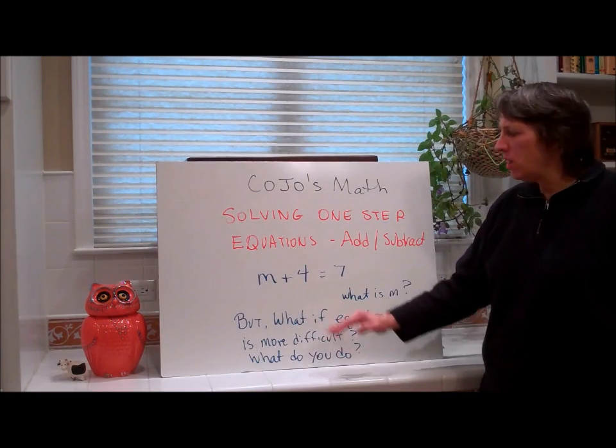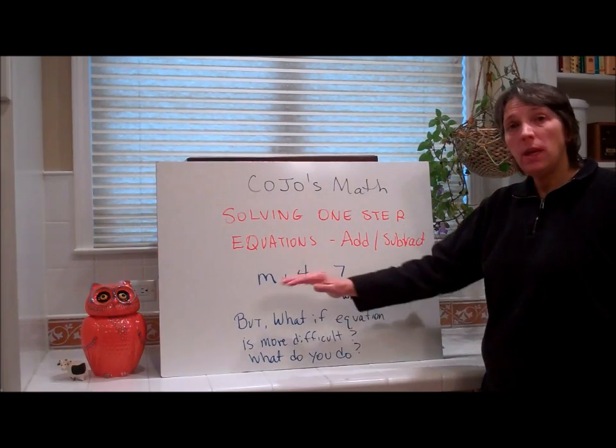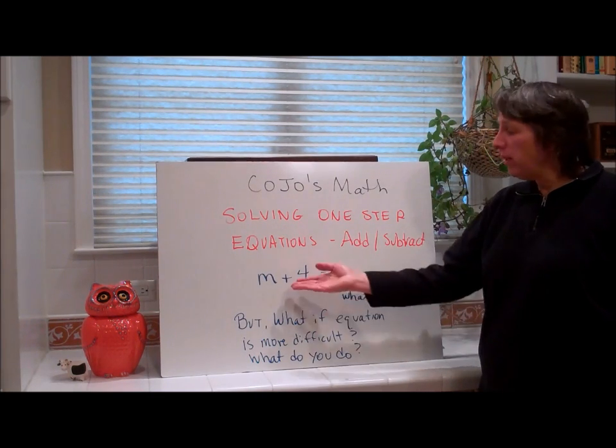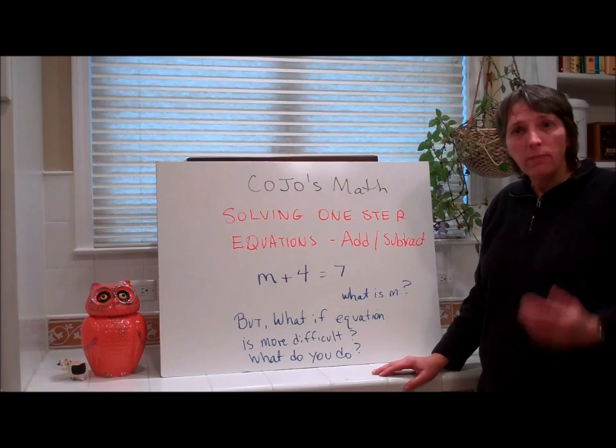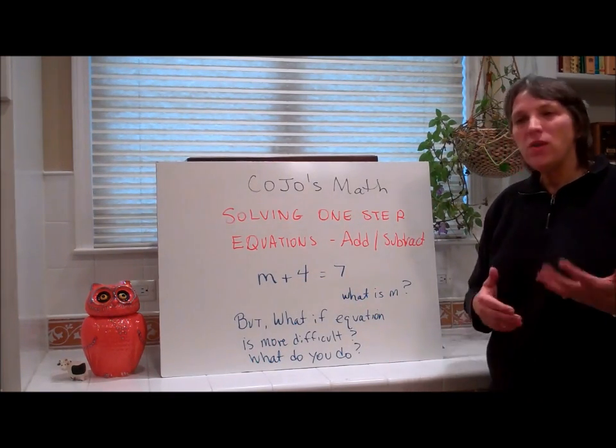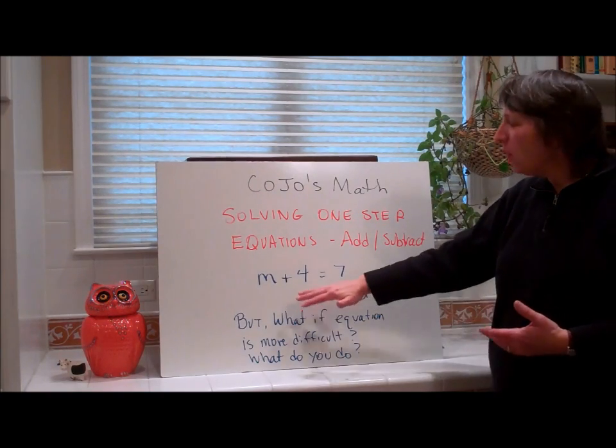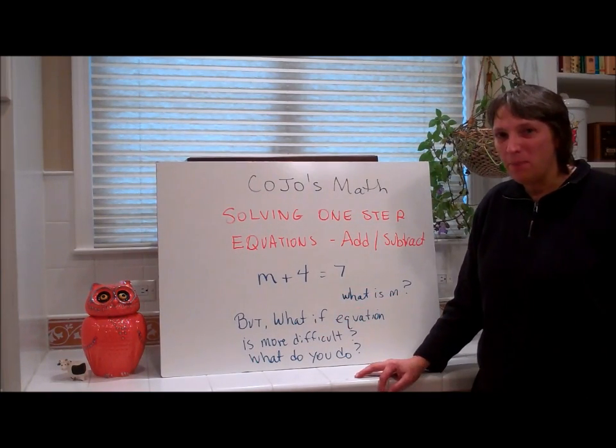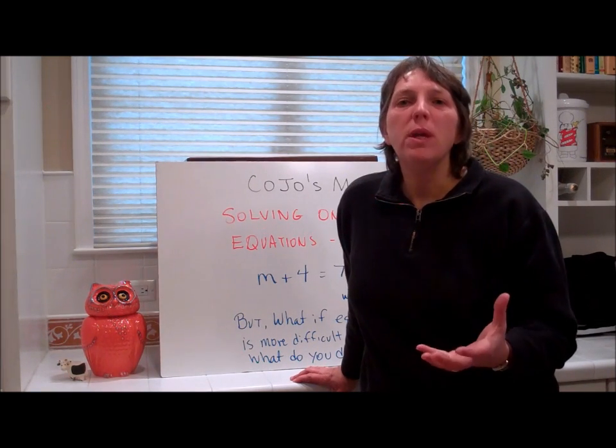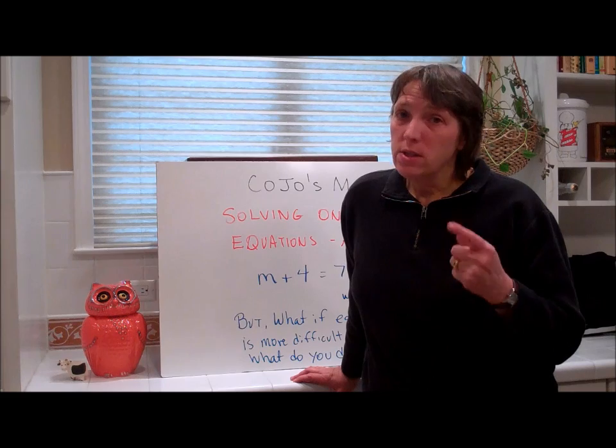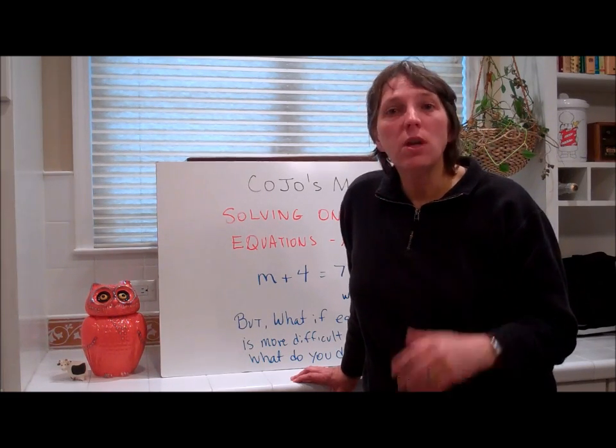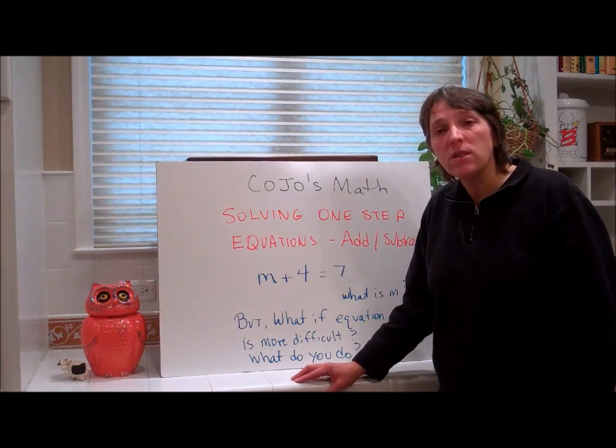So we have this equation m plus 4 equals 7. You should know the answer to that. What is m? 3, because 3 plus 4 equals 7. But what if the equation is more difficult? Because equations aren't always this simple. You're going to be having multi-step equations that you won't be able to do in your head. So you need to learn the steps on basic equations so that you can solve the more difficult ones later.